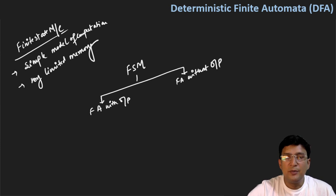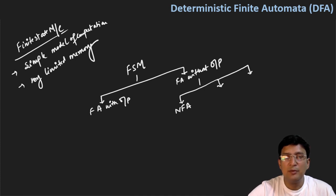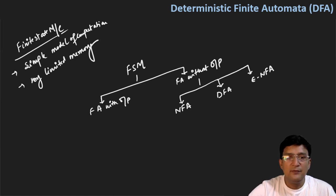When dealing with finite automata without output, there are three types of machines: NFA (non-deterministic finite automata), DFA (deterministic finite automata), and epsilon-NFA (epsilon non-deterministic finite automata). For finite automata with output, we will learn two types: Moore machine and Mealy machine.